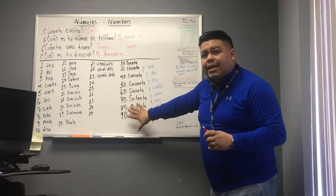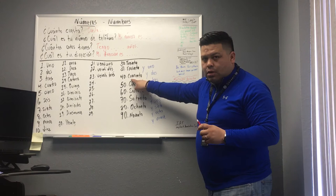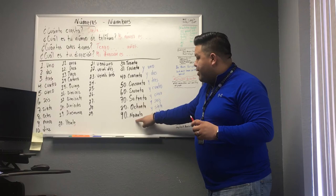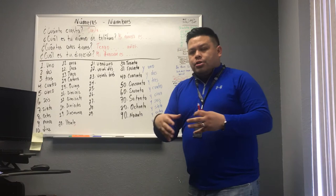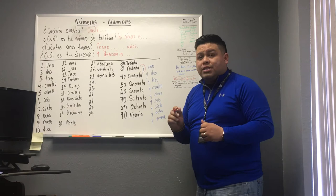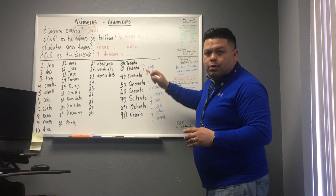Treinta. Now let's pay attention here. Once we get to thirty, the numbers start to have three words. Treinta — we add the y, which in Spanish we say as 'ee'. So: treinta y uno — three words.